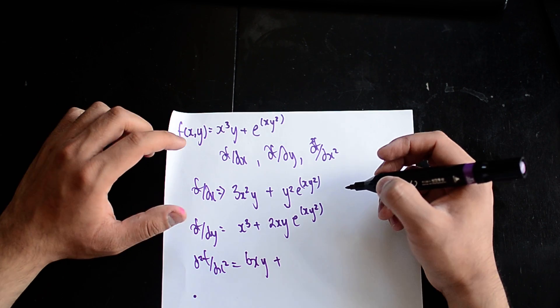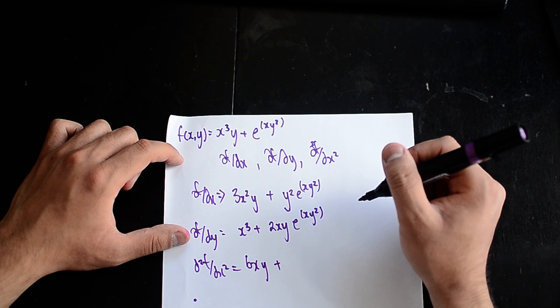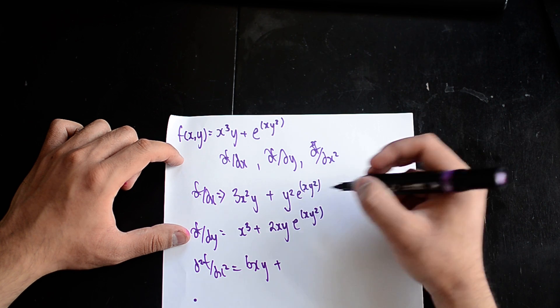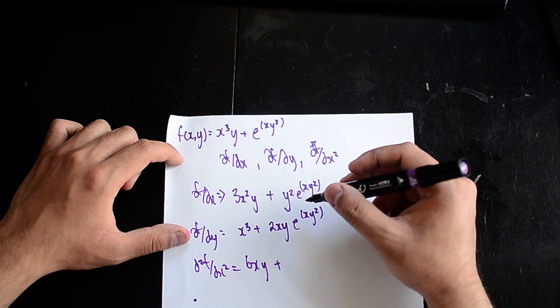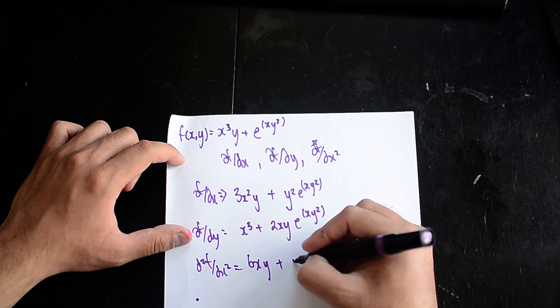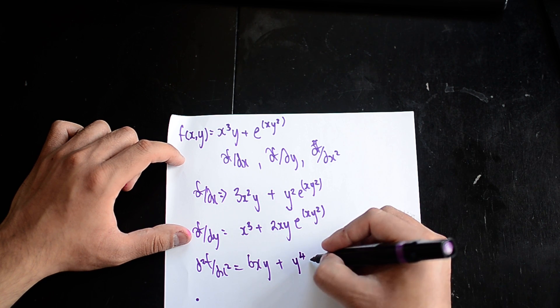Now this differentiated, we let t equal xy² and differentiate that and multiply it by what we substituted in for e^t. So we're going to get y⁴e^(xy²).